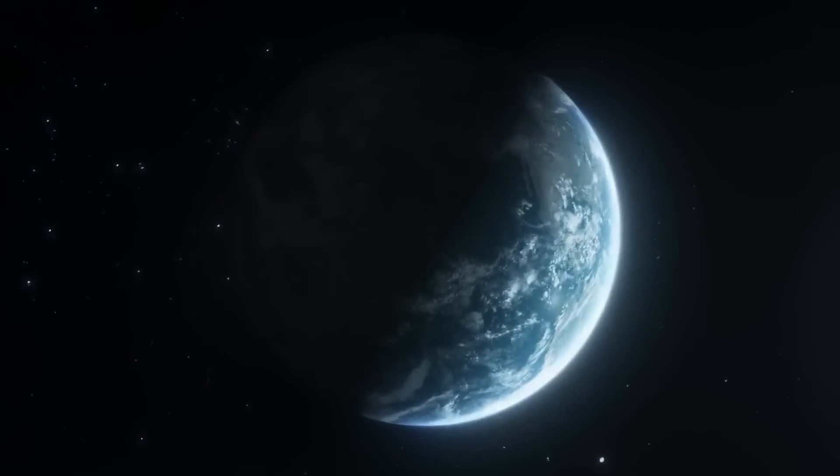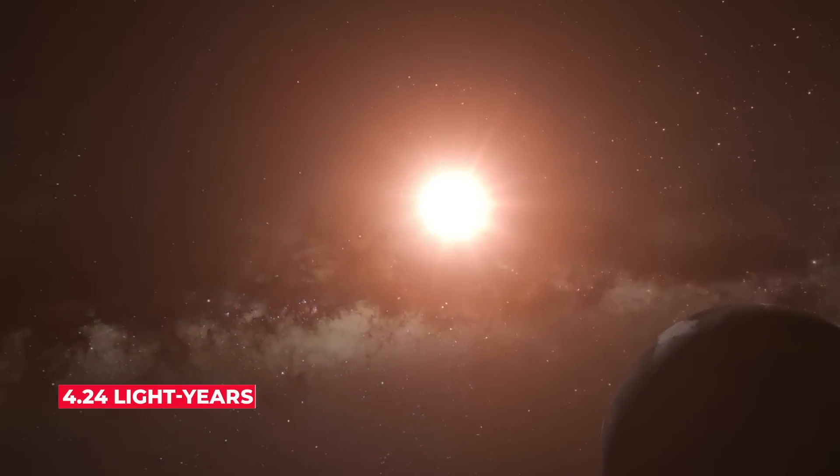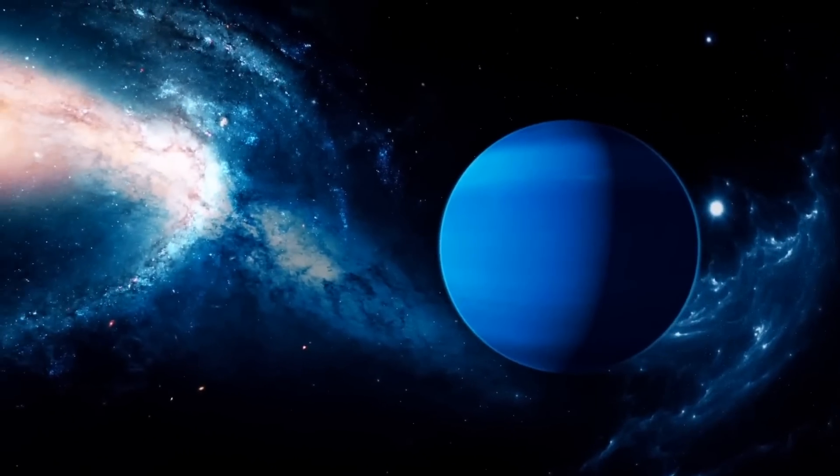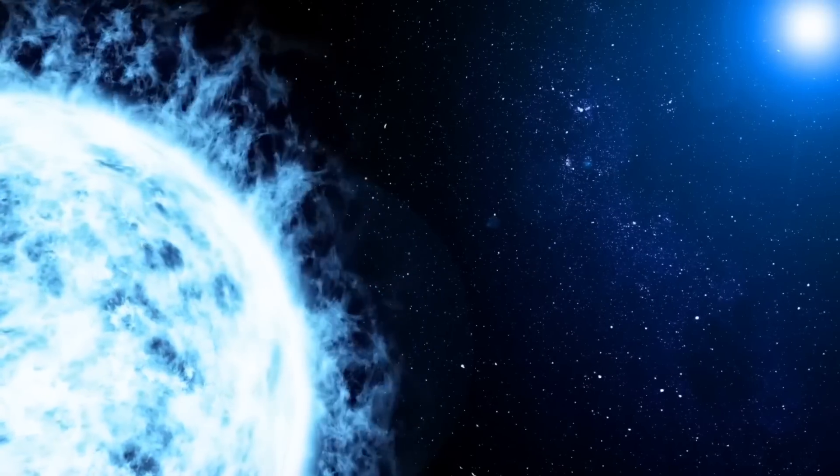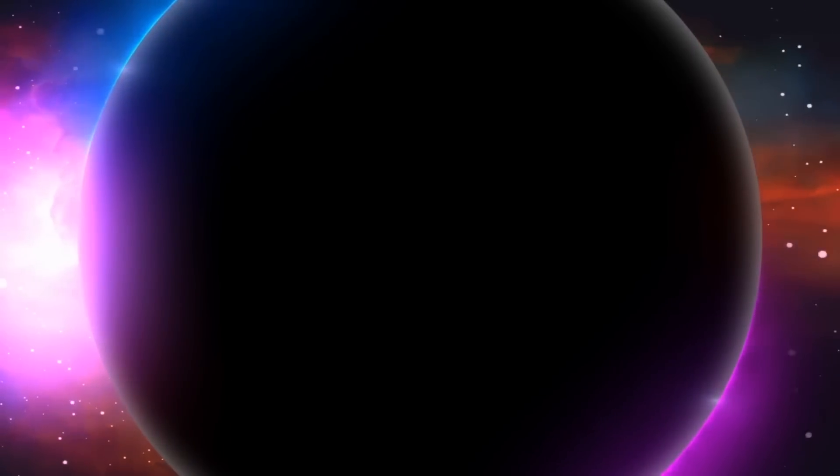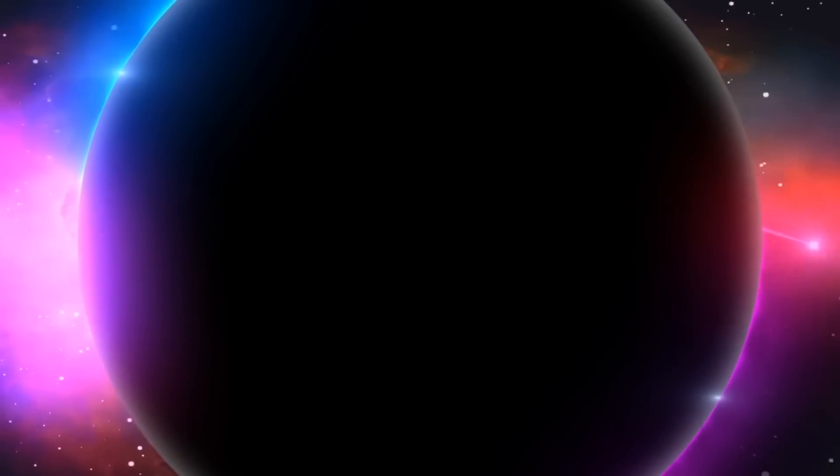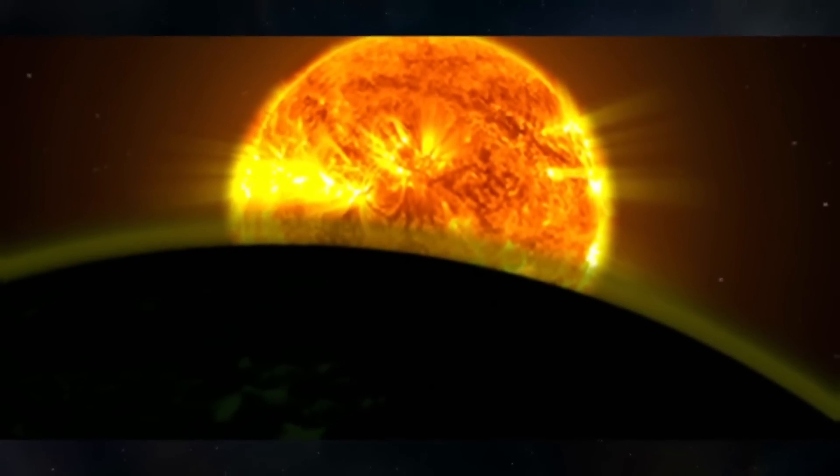Proxima b is one of the nearest exoplanets to Earth, 4.24 light years separated from Earth. Proxima Centauri, the closest star to our solar system, orbits Proxima b. According to scientists, Proxima b, which was identified in 2016, lies on its Sun's habitable zone.